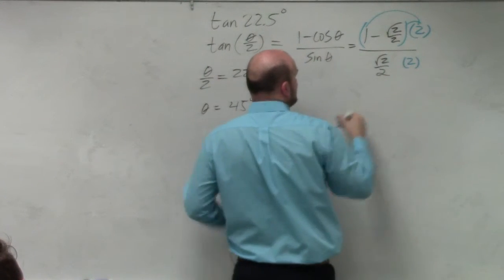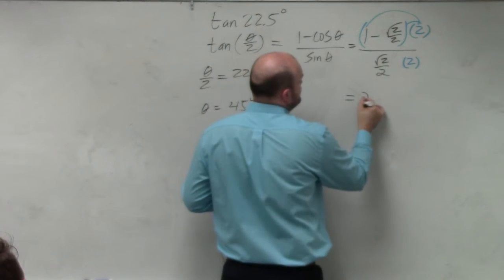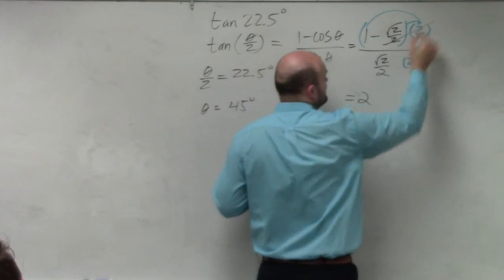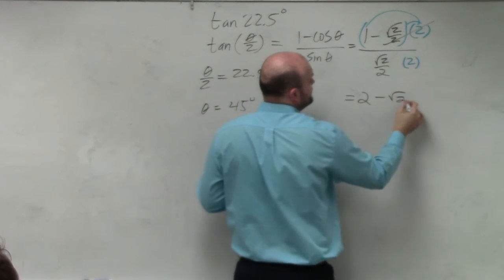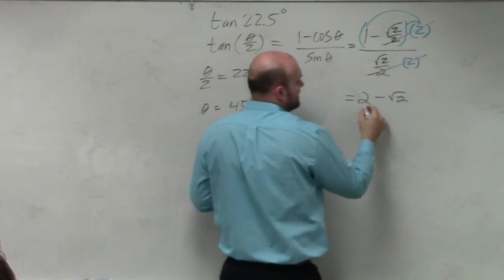Apply distributive property. 2 times 1 is 2. 2 times √2/2 gives us 2 minus √2. Those 2s divide out as well.